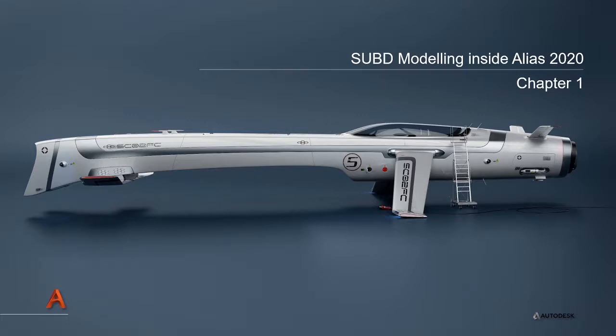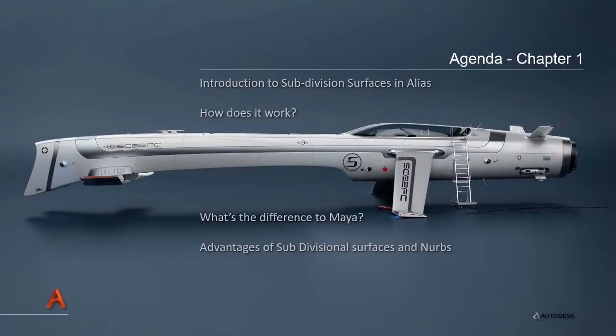This is a series of videos to work through the different subdivision surface modelling tools within Alias added in 2020. The agenda includes introducing subdivision surfaces in Alias, looking at how they work, the difference between Alias and Maya, and some of the advantages of subdivision surfaces over NURBS.